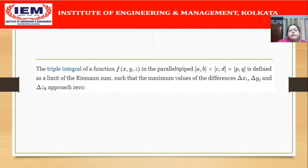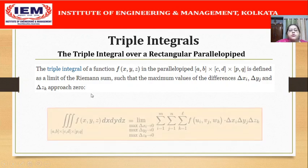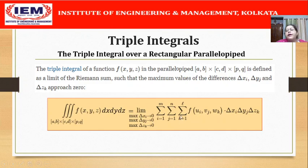We can now define the triple integral of f(x,y,z) over the parallelepiped [a,b]×[c,d]×[p,q] as the limit of the Riemann sum such that the maximum values of Δxᵢ, Δyⱼ, and Δzₖ approach 0. Thus: ∭f(x,y,z) dx dy dz = lim (max Δxᵢ→0, max Δyⱼ→0, max Δzₖ→0) Σ f(uᵢ, vⱼ, wₖ) Δxᵢ Δyⱼ Δzₖ, where i goes from 1 to m, j from 1 to n, and k from 1 to n. With this, we have defined the triple integral of f(x,y,z) over a rectangular parallelepiped.